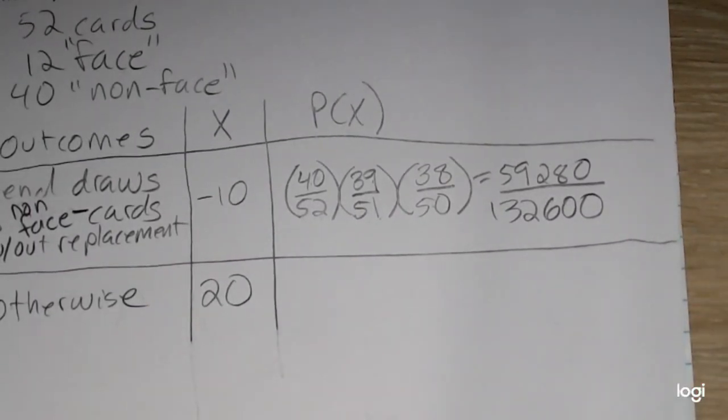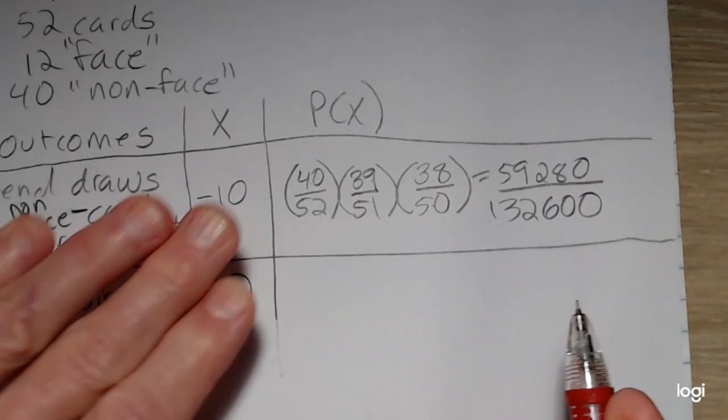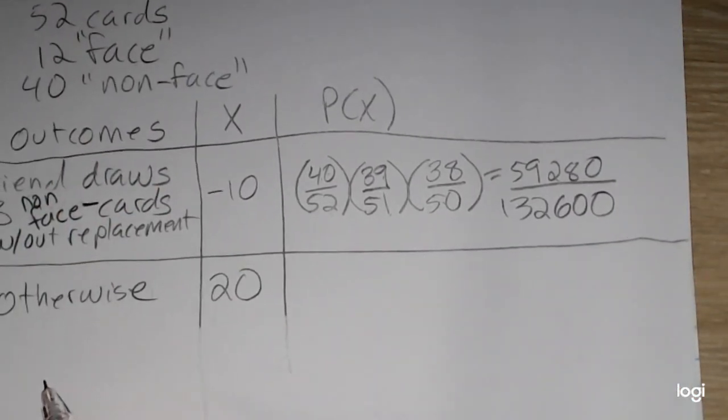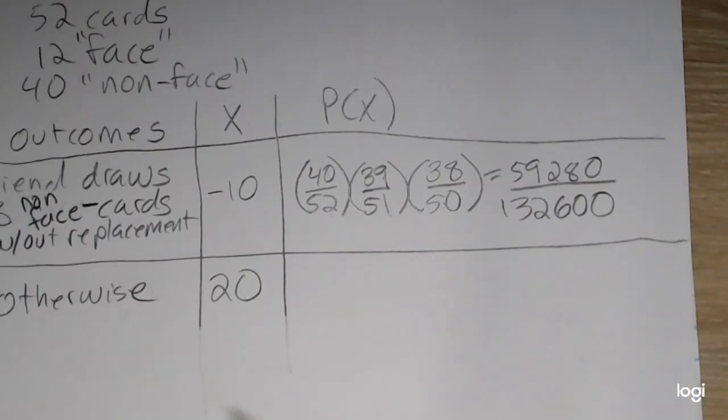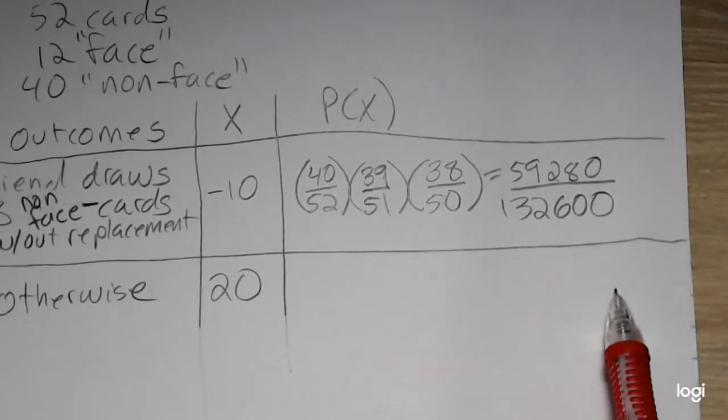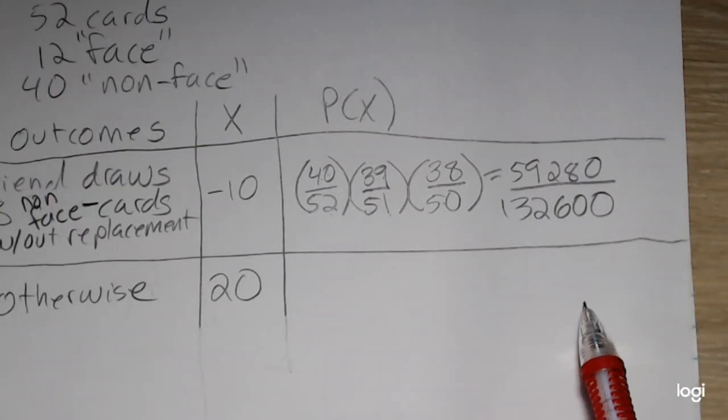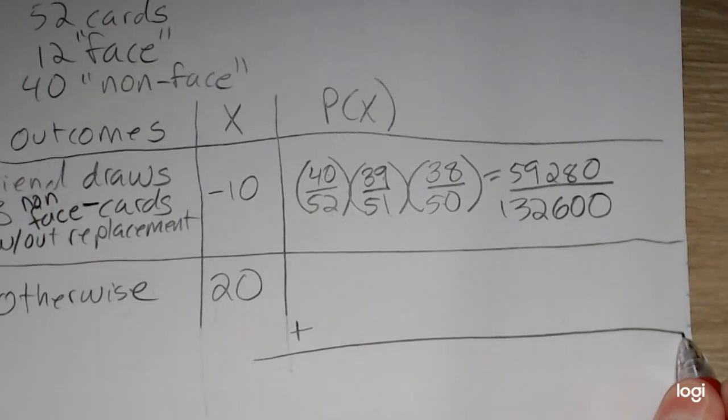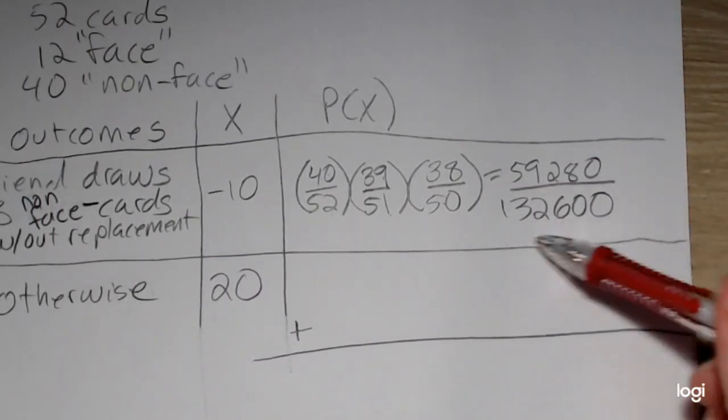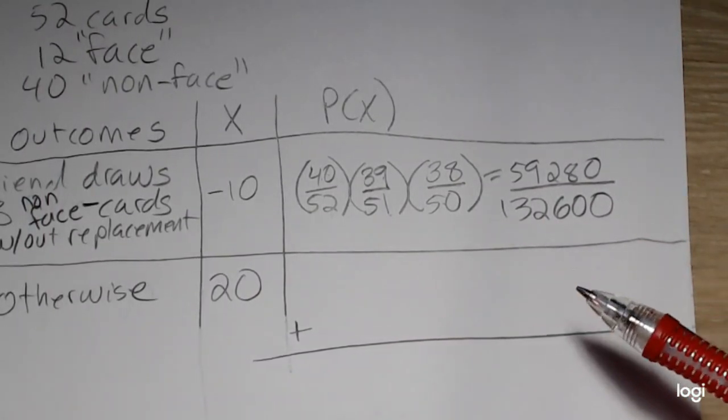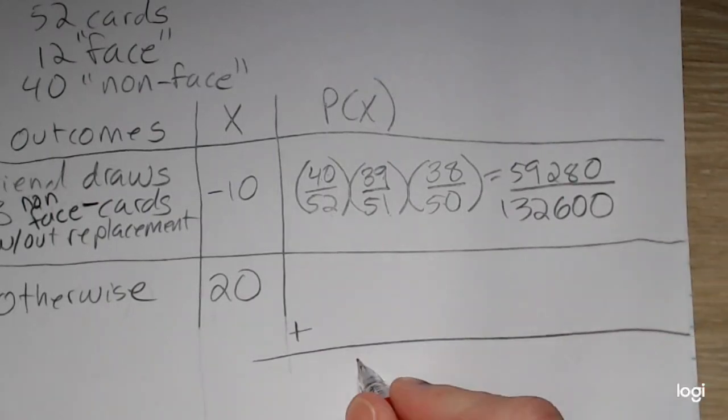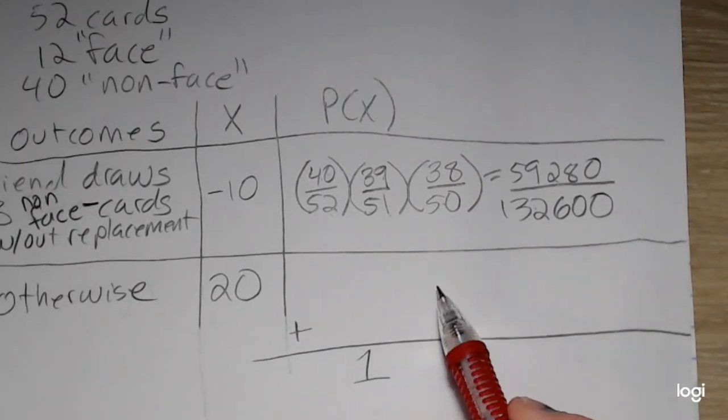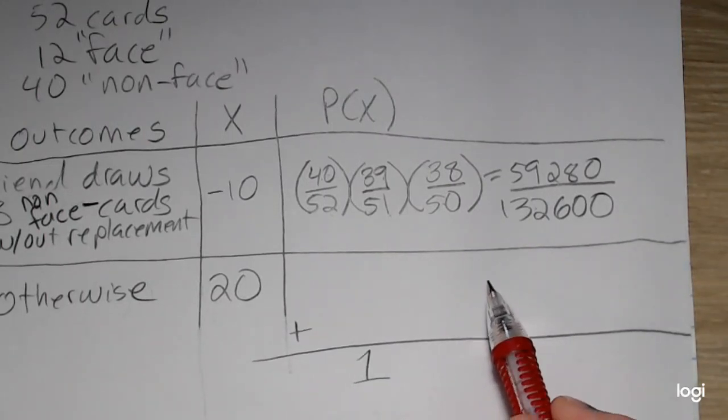Now, for the case of everything else, this otherwise case, it's too lengthy and cumbersome to directly reason finding the probability here. So I'm going to use the property that this probability plus whatever this probability is has to sum to 1. So this plus this has to sum to 1. So using the rule of complementary events, and these would be two complementary events here,